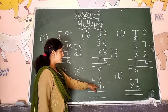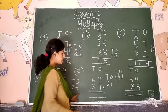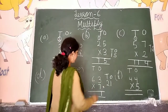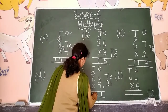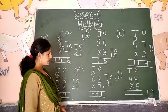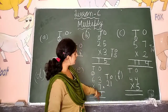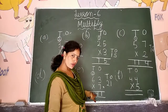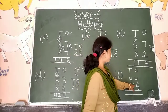Next: seven threes are twenty-one. We write one below the ones place, and carry over two below the tens place. Seven sixes are forty-two, plus the carry over two — forty-four. So the answer is four hundred forty-one.